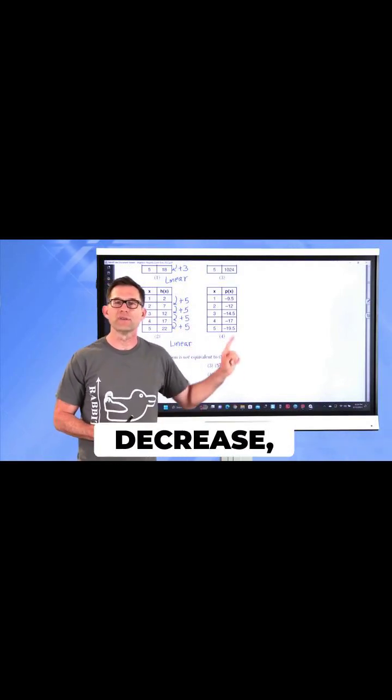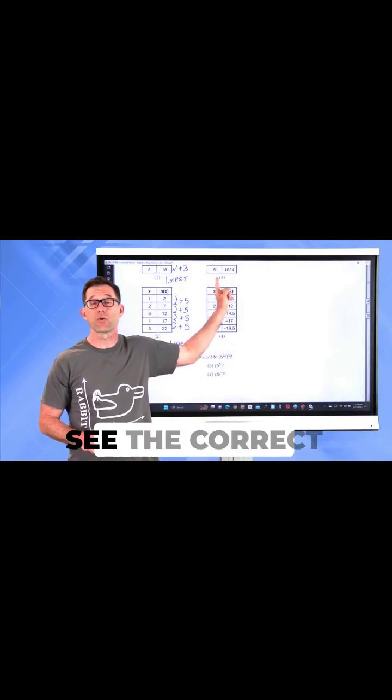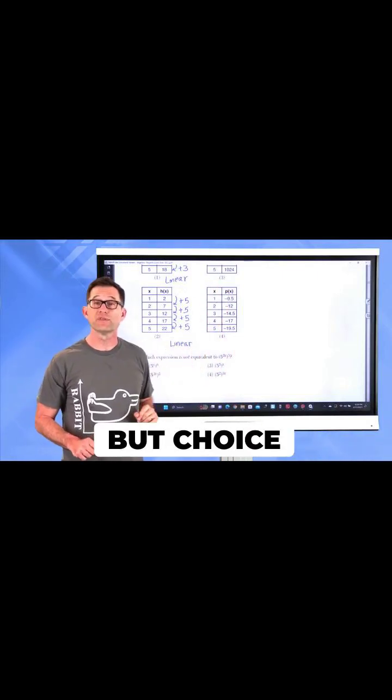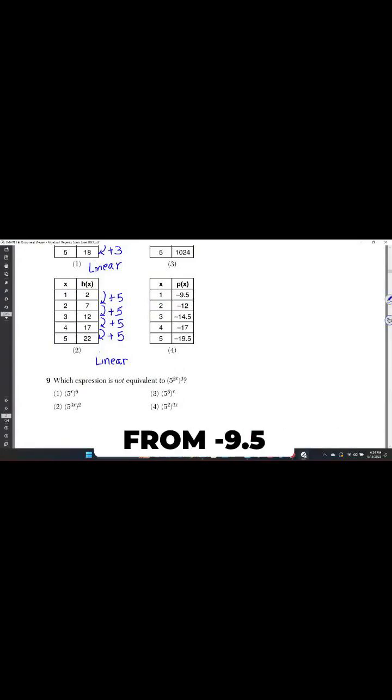Talking about a constant decrease, let's take a look at choice four, and then we'll see the correct choice is choice three. But choice four, where we go from negative nine point five to negative twelve, that is a decrease of negative two point five. And we see that that happens each time we keep subtracting two point five to get to the next one. I know that's a little bit challenging because of the negative numbers there.